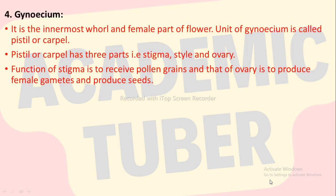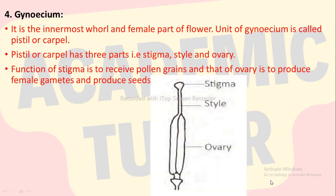Gynoecium is the innermost whorl and female part of the flower. The unit of gynoecium is called pistil or carpel. Pistil or carpel has three parts: stigma, style and ovary. The function of stigma is to receive pollen grains, and that of ovary is to produce female gametes and produce seed.